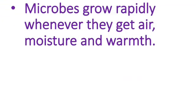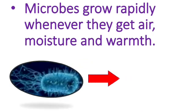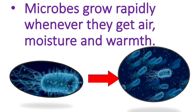Microbes grow rapidly and multiply if they get proper air, moisture — that is water — and warmth. For example, if there are two microbes, they will become four. They multiply themselves — four will become sixteen, and they go on and so on.